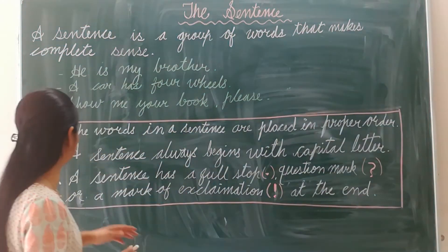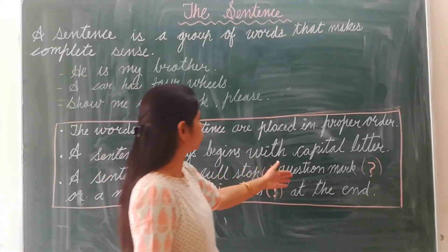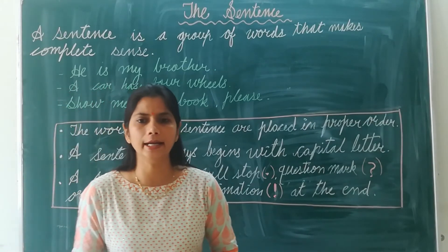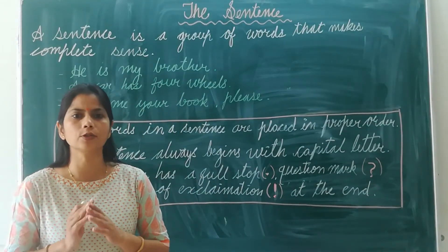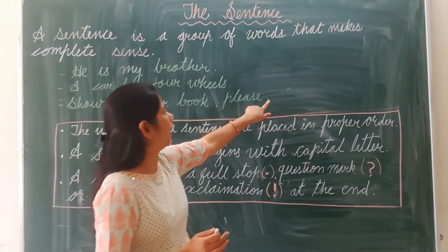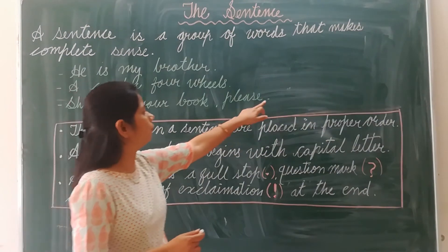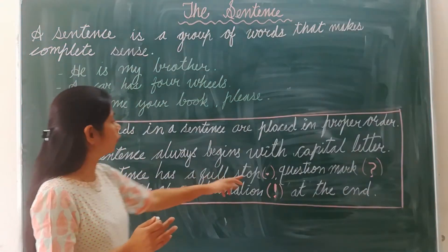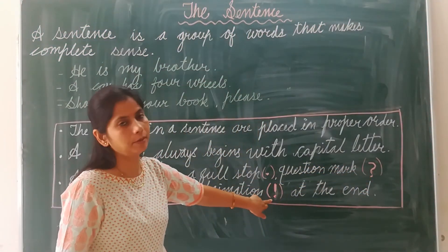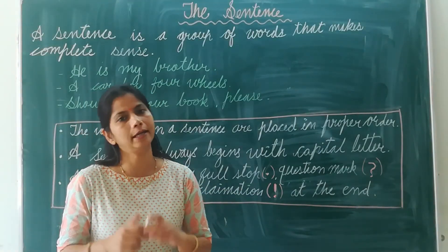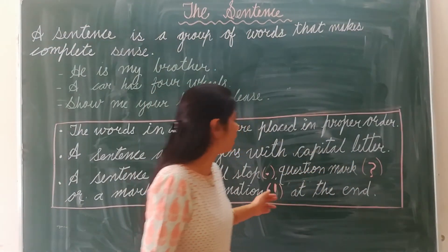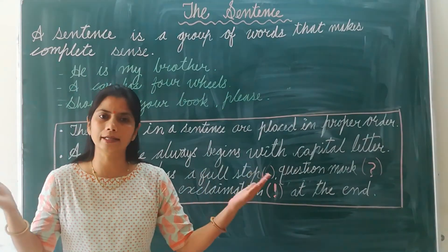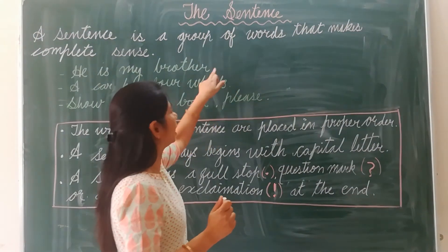The third important thing about a sentence is that it has a full stop, a question mark, or an exclamation mark at the end. Whenever a sentence ends, when something complete ends, we make a mark at the end. It can be a full stop, a question mark, or an exclamation mark — it depends on the kind of sentence. Accordingly, we put a mark at the end.